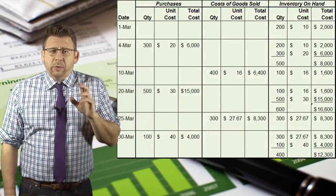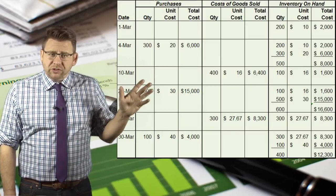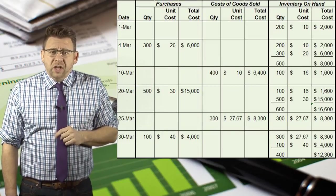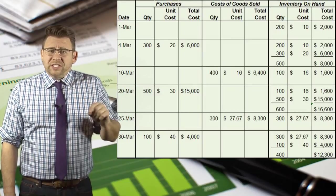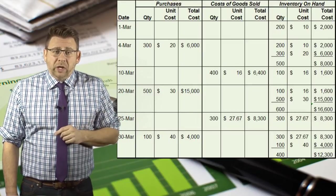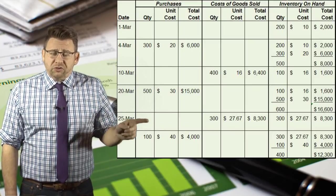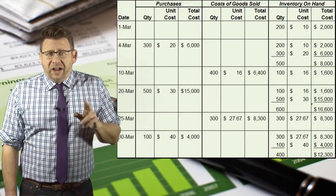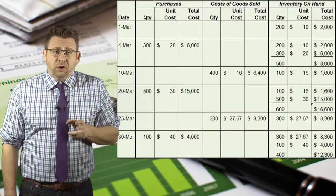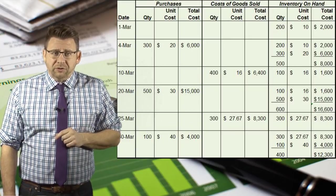Finally, if we were completing a perpetual inventory record, you can see the purchases are entered in the purchase columns, the units sold are recorded, and notice that they total the cost of goods sold we already computed — March 10th $6,400 and March 25th $8,300. Ending inventory is the running total that results in 400 units of inventory with a cost of $12,300.